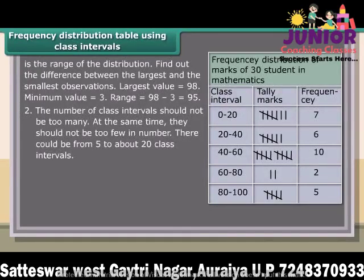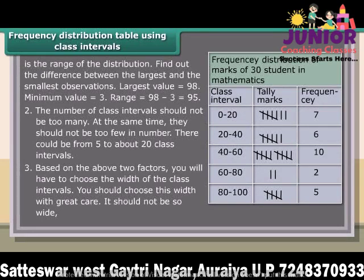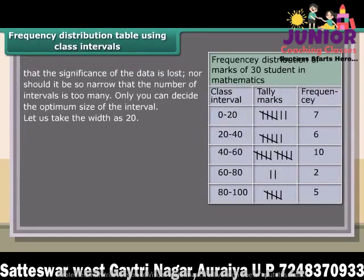The number of class intervals should not be too many, nor should they be too few in number. There could be from 5 to about 20 class intervals. Based on these two factors, you will have to choose the width of the class intervals with great care. It should not be so wide that the significance of the data is lost, nor so narrow that the number of intervals is too many. Only you can decide the optimum size of the interval. Let us take the width as 20.